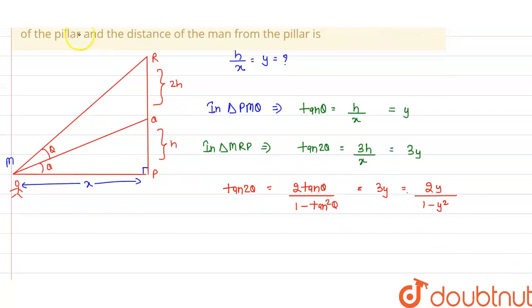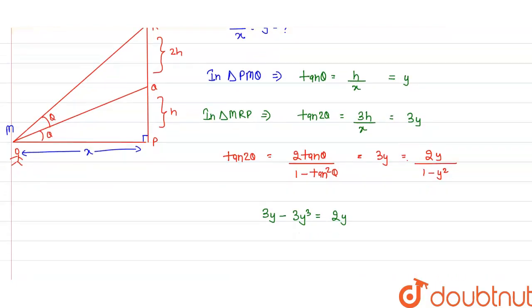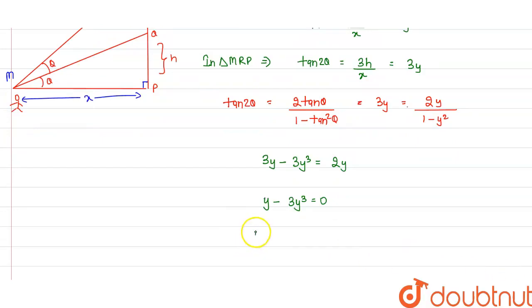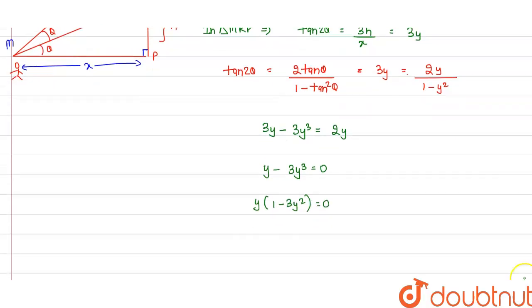Cross-multiplying: 3y(1 − y²) = 2y, which gives 3y − 3y³ = 2y. Rearranging: y − 3y³ = 0, so y(1 − 3y²) = 0.